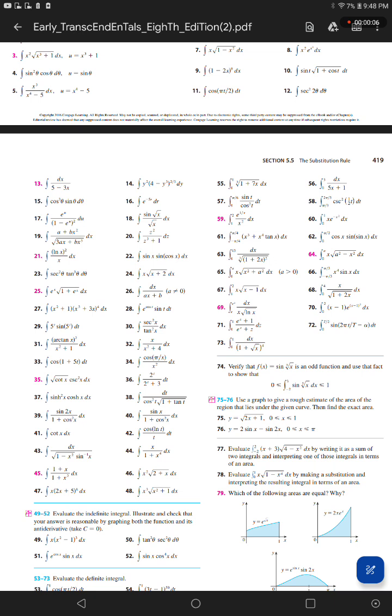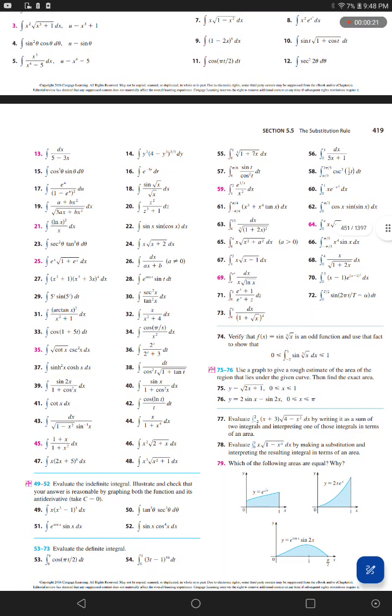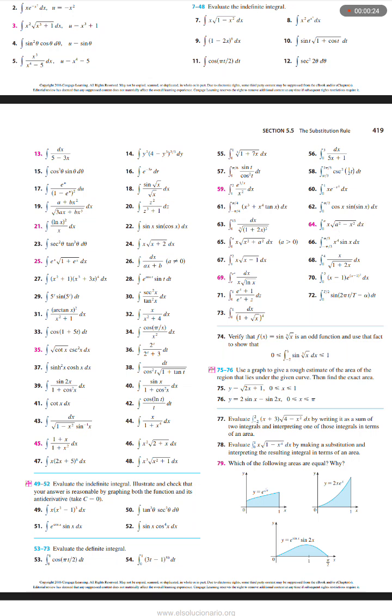Evaluate the integral from 0 to 1 of x times the square root of 1 minus x to the 4th power dx by making a substitution, interpreting the resulting integral in terms of an area. Which of the following areas are equal: y equals e to the power square root of x, y equals 2x e to the power x, y equals e to the power sine x times sine 2x?